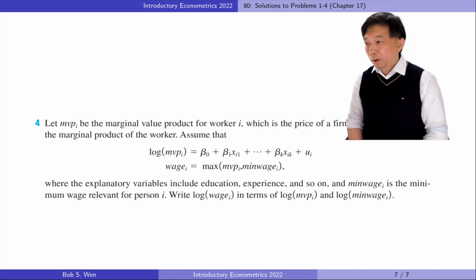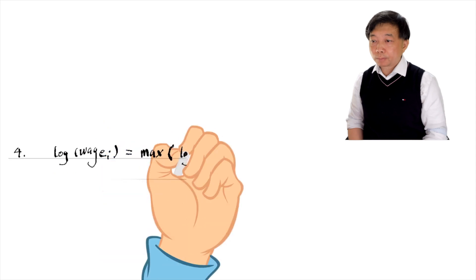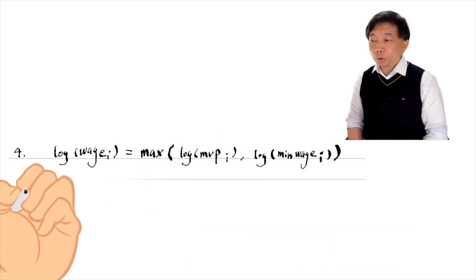The question asks us to write the log of wage in terms of log of MVP and log of minimum wage. We can write the log of wage for worker i as follows. The reason is that the log function is an increasing function.